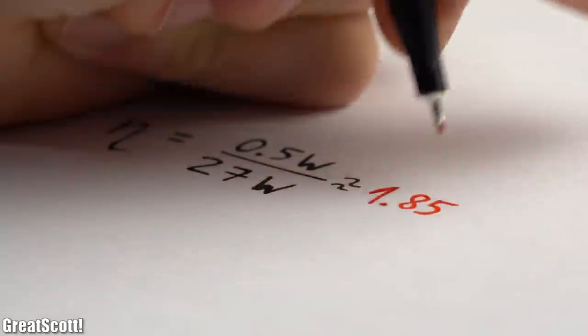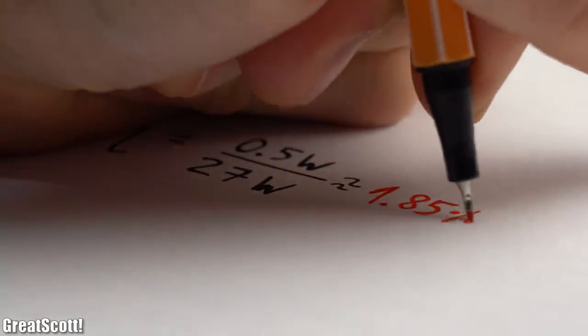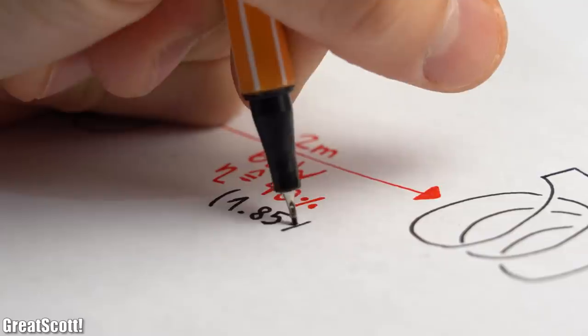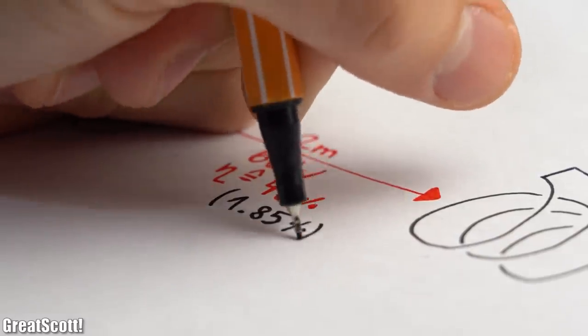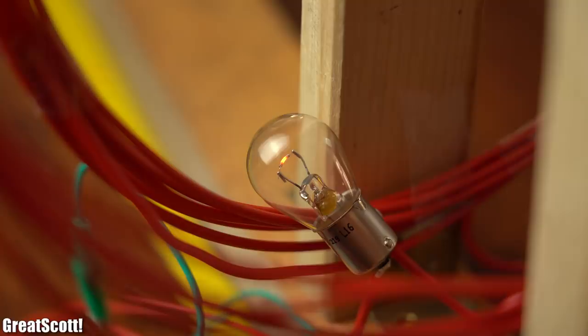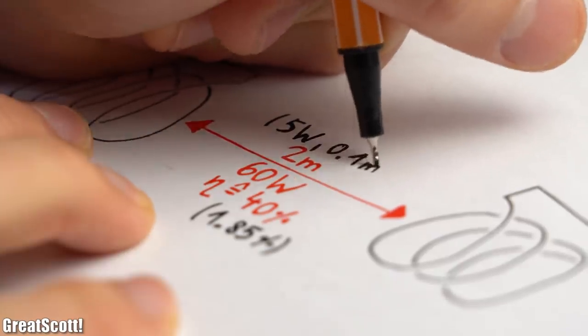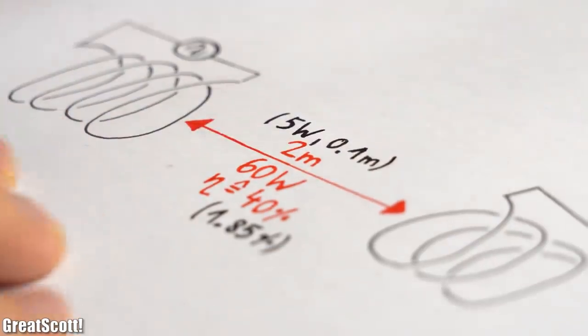So we reached an efficiency of around 1.85%, which is far away from MIT's 40%. And when it comes to transmitting around 5W of power, then my system can only do it over a distance of 10cm, which once again is far away from MIT's results.